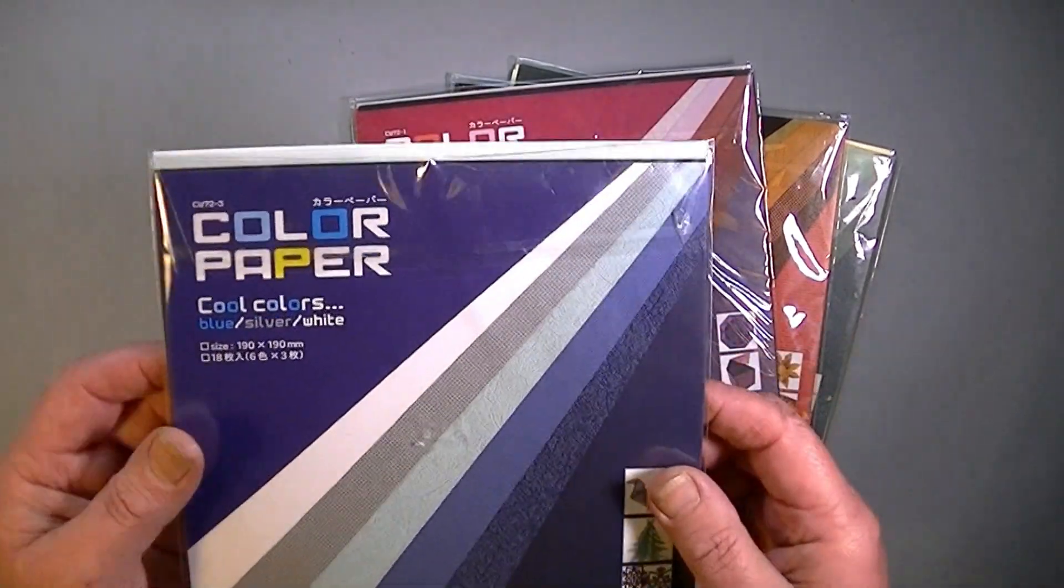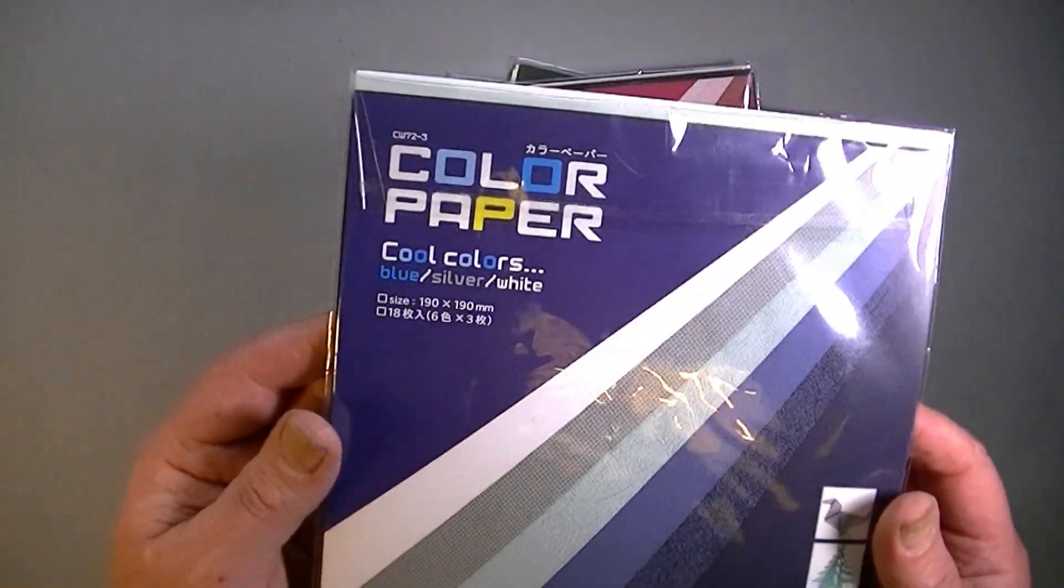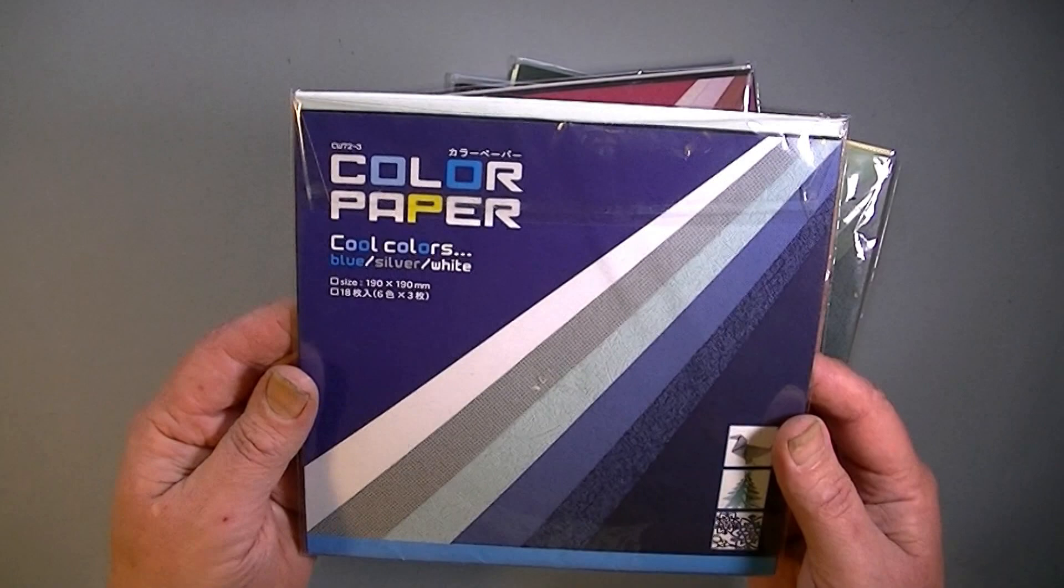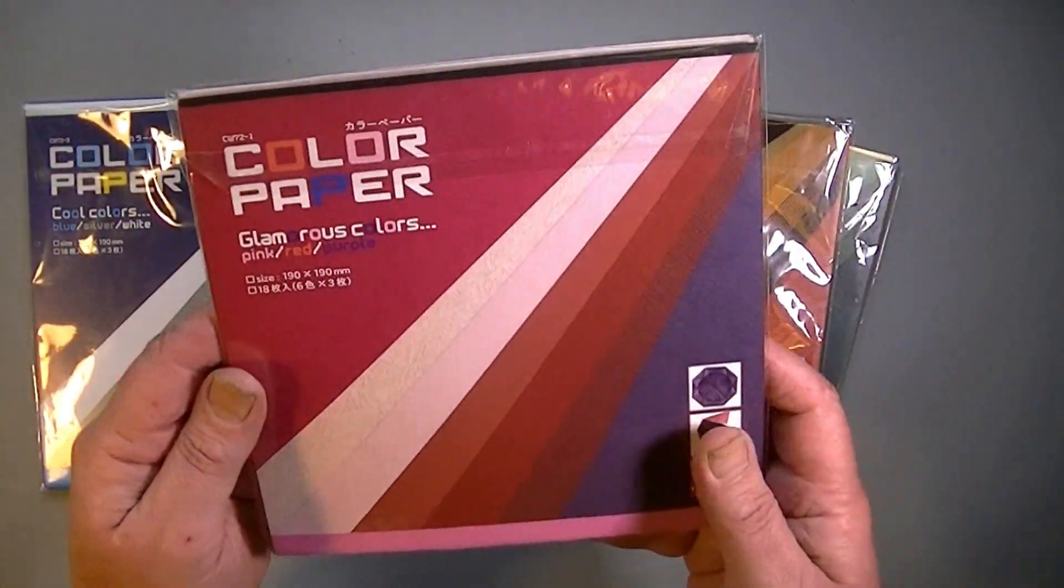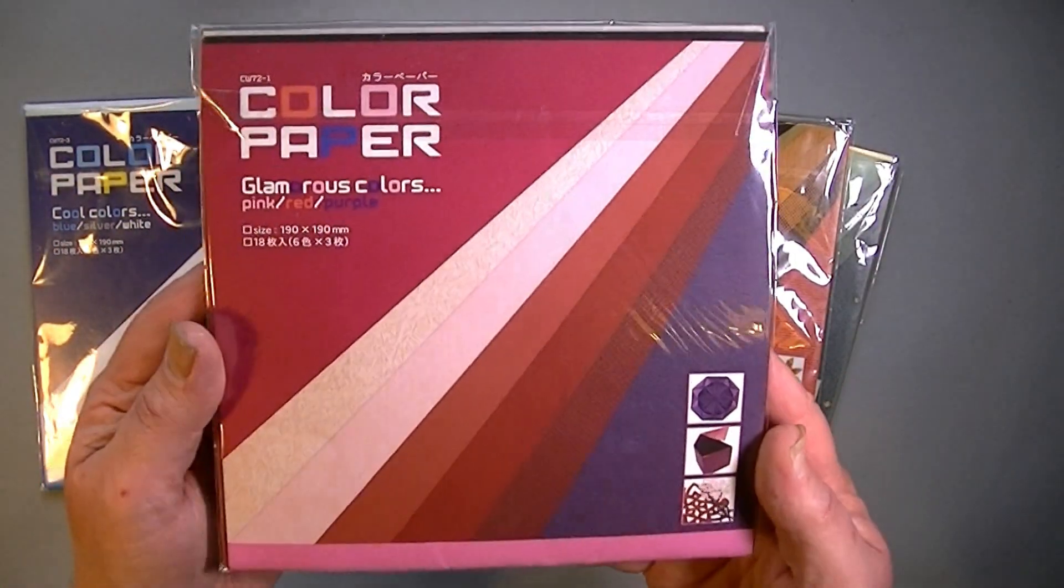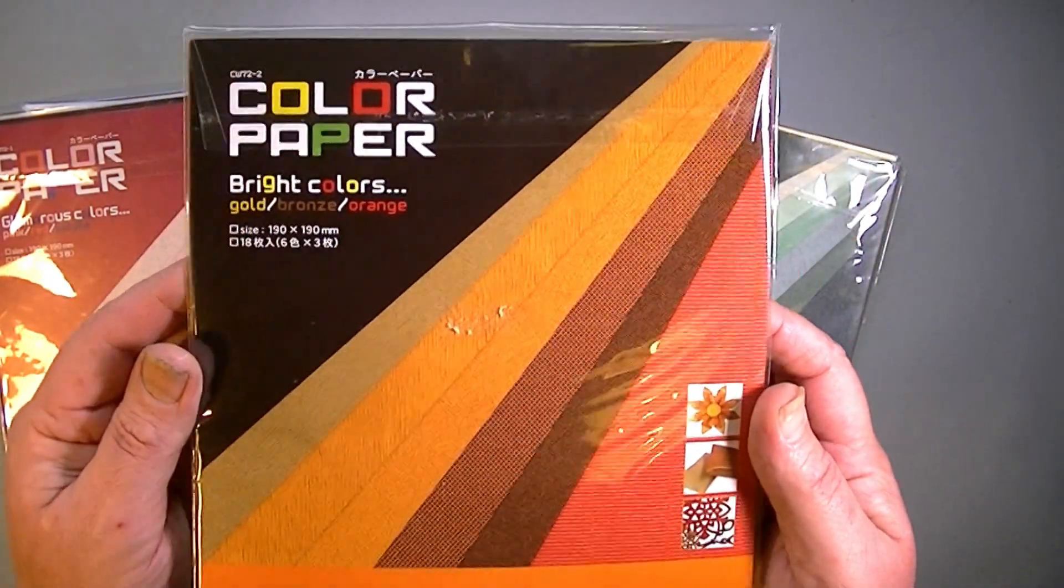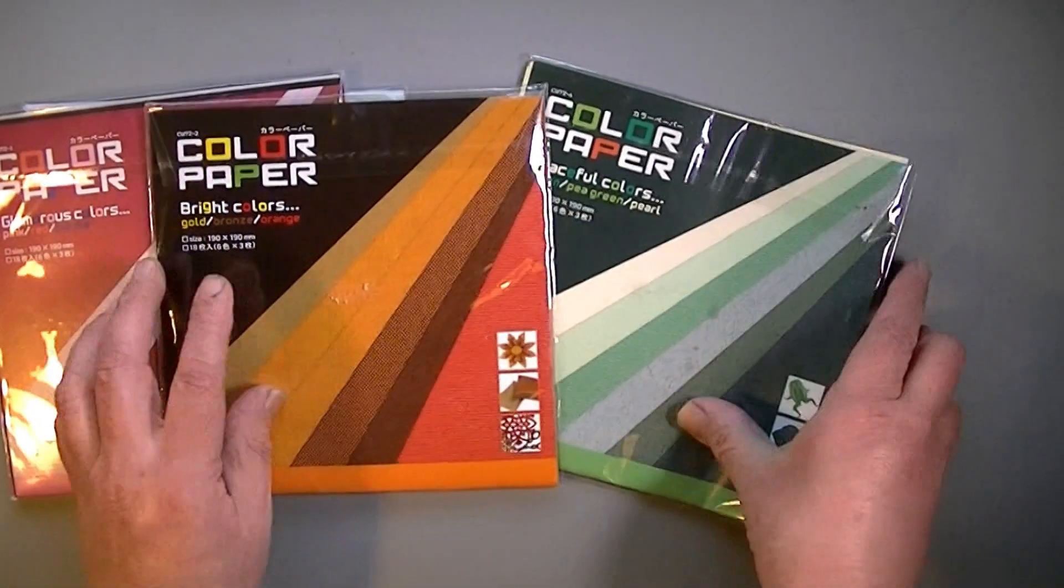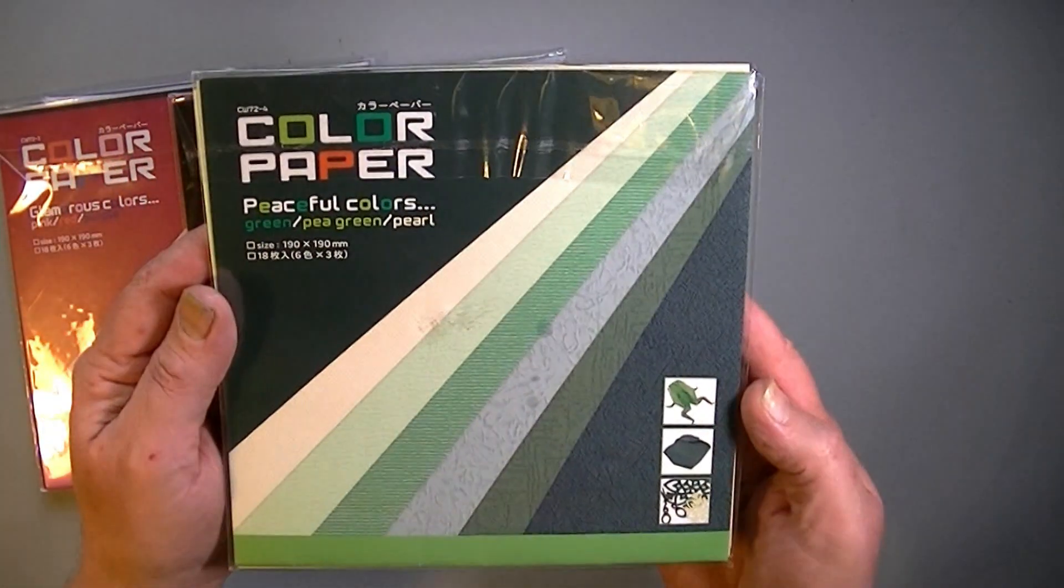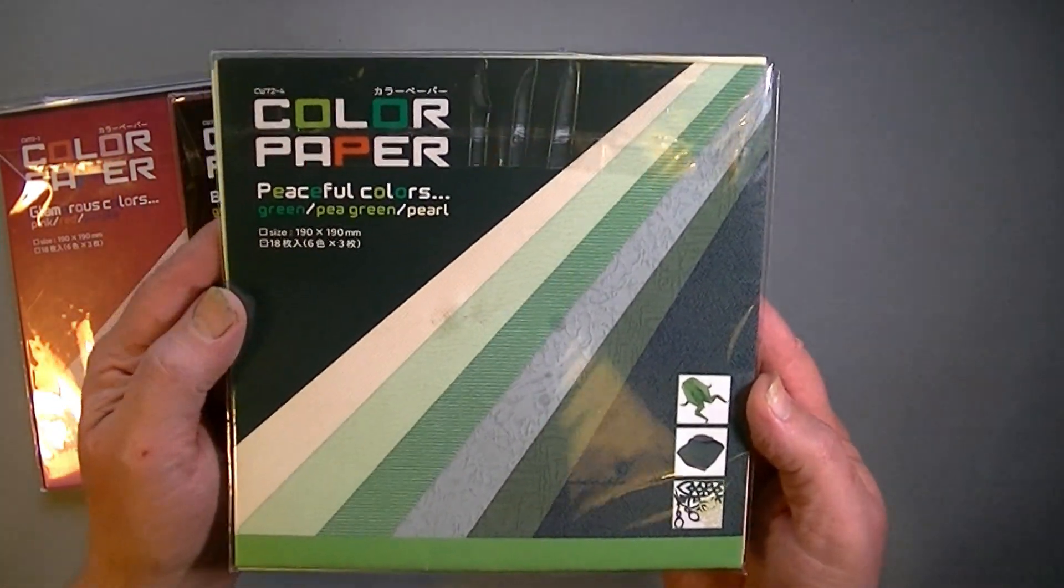So I'll show you the different color ranges. This is the blue, otherwise known as cool colors. Glamorous colors - pink, red, and purple. Bright colors - gold, bronze, and orange. And peaceful papers - green, pea green, and pearl.